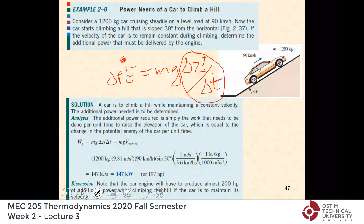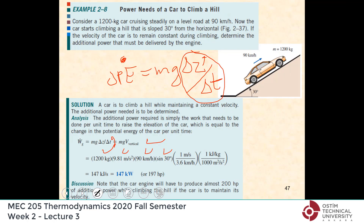Therefore, this is the power that I need. If you substitute the values: the mass is 1200 kilograms, g is 9.81, and the velocity is 90 km/h but the vertical component is simply multiplied by sine 30 along with some conversion factors.